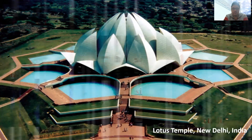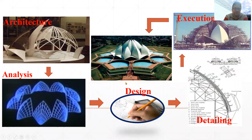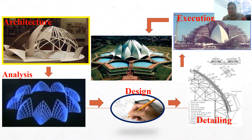First, we will look at the application related to architecture. There is a requirement from the client to make an iconic building. The client contacts the architect, and the architect tries to develop an idea — often inspired by nature. In this particular example, the idea is inferred from the nature of a Lotus Flower, and the architect wants to build a building that looks like a Lotus Flower.